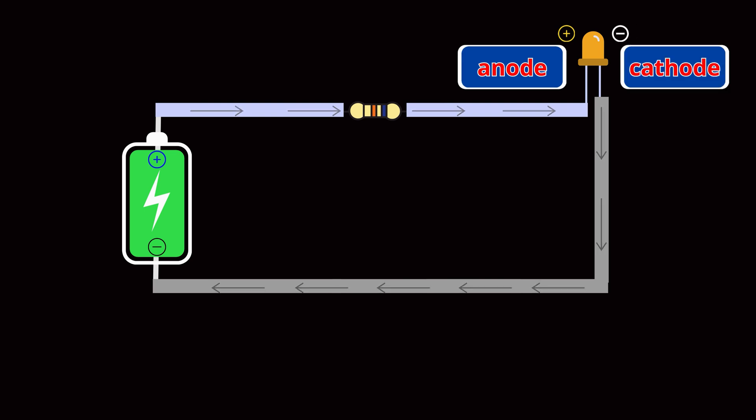one negative, the cathode. When connected properly, electrical current flows from the anode to the cathode, allowing the LED to emit light.